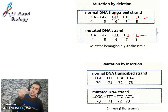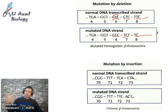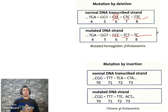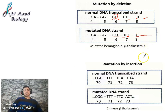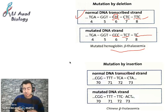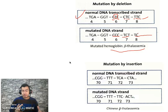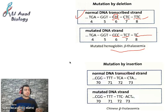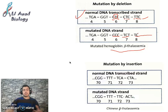This is called a deletion mutation, where one or more nucleotides are deleted at the level of the DNA. This leads to beta-thalassemia — a very dangerous, disastrous anemia leading to the absence or destruction of red blood cells. These individuals must always receive blood transfusions.